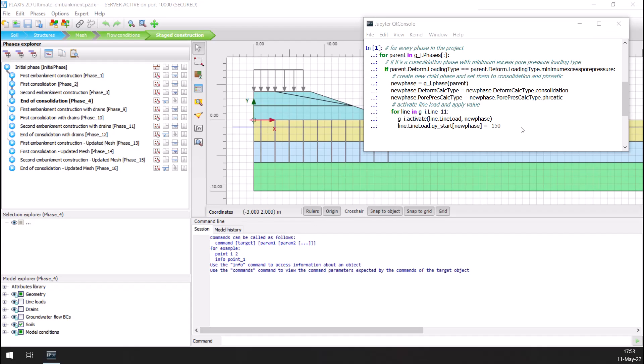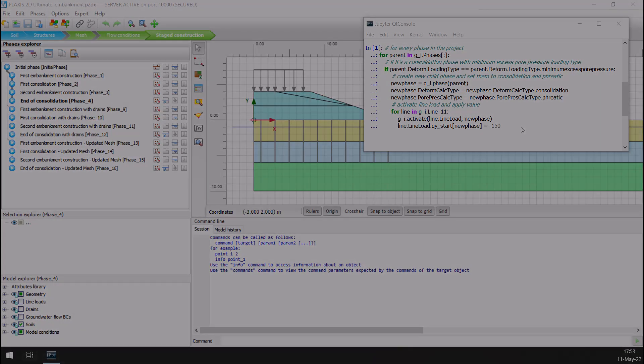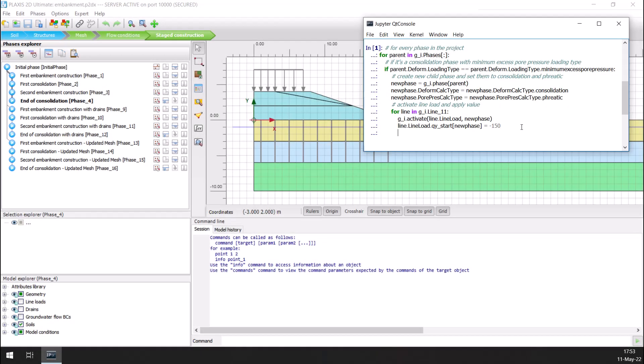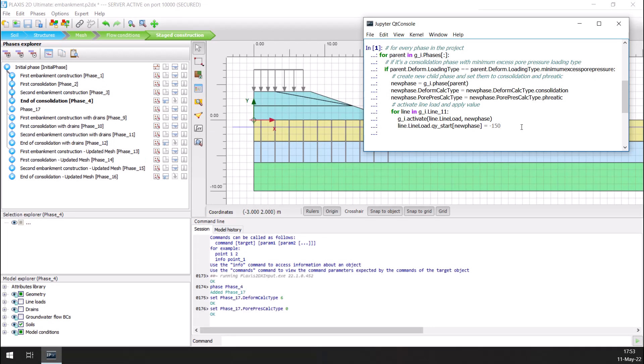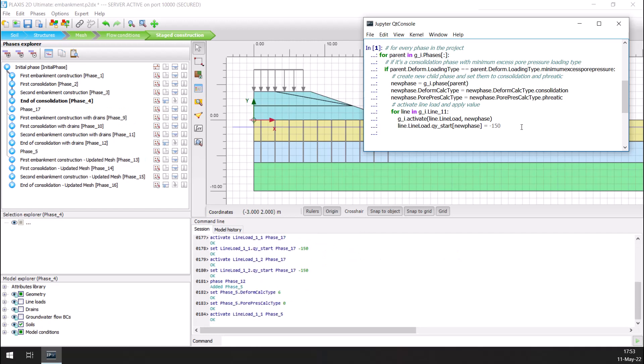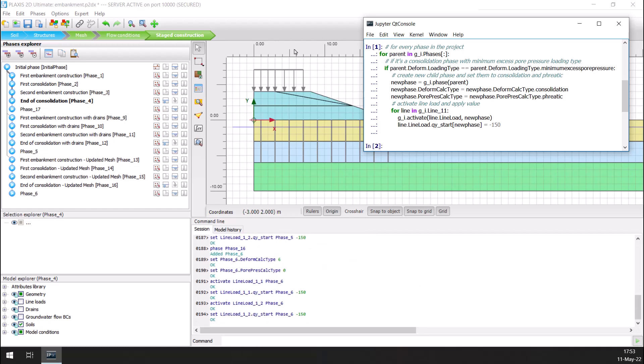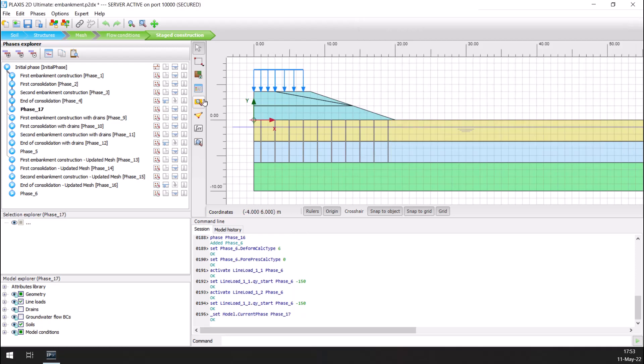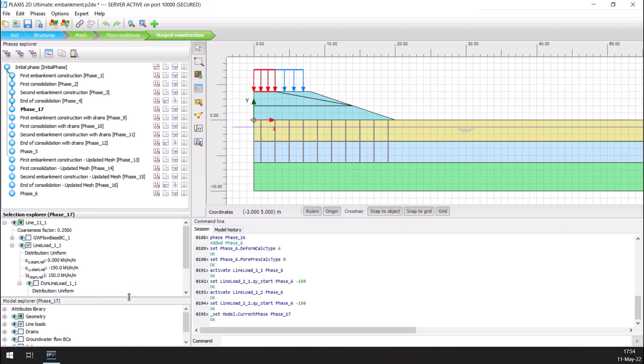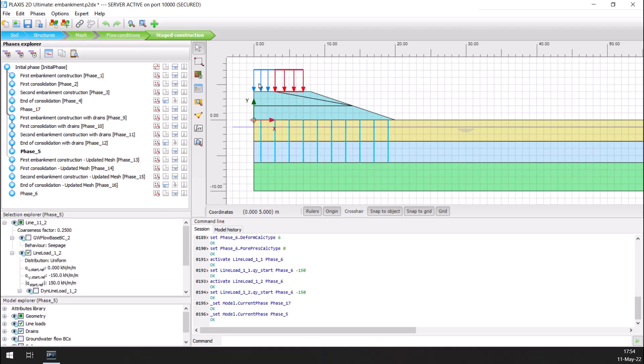Looking at the Plaxis input model, I have added my code in the Python interpreter. I can press enter to start running the code. While the code is being executed, you can see the new phases being created only when the specific condition is met for the final consolidation phases. When the process is finished, I can double check and confirm that for those phases, my line loads are activated and set to the intended value. And all that with only a few lines of code.